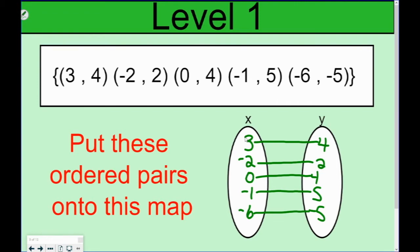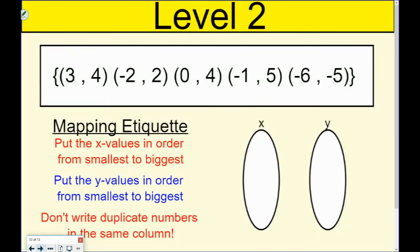Now, we're also going to have mapping etiquette. An unorganized mapping is not acceptable — it just looks like a table of values. The whole purpose of a mapping is to condense down what we have: we want to condense the x's to have no repeats, and put them in order from least to greatest just like we do a table. The first rule is we put the x values in order from smallest to biggest, and we don't write duplicate numbers in the same column.